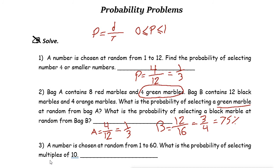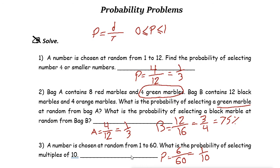Let's take a look at the next one. A number is chosen at random from one to sixty, so the total numbers we have is sixty. The probability of selecting multiples of ten: how many multiples of ten do we have from one to sixty? We have ten, twenty, thirty, forty, fifty, and sixty — so we have only six. Six out of sixty, or one over ten, is the probability of selecting a multiple of ten from one to sixty.